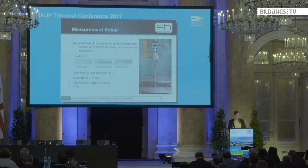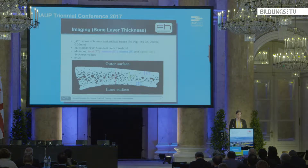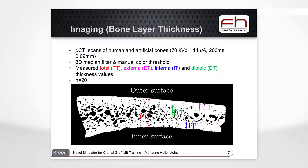To validate realistic haptics, surgical tool insertion measurements were performed with a realistic surgical drive also used in hospitals, equipped with three different tools: a saw, an engraving mill, and a drill. A load cell recorded actual insertion forces at different feed rates and tool insertion depths. To achieve realistic anatomy, micro CT scans of human specimens and artificial bones were performed. Measurements included total thickness, diploë thickness, external table thickness, and internal table thickness, all measured by an expert.